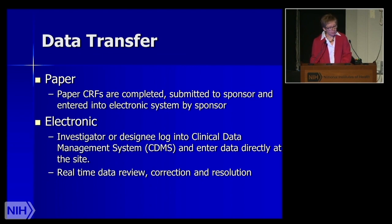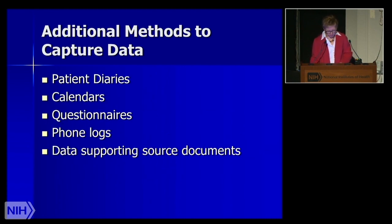For paper CRFs, forms are usually completed at the site, submitted to the sponsor, and then electronically entered by the sponsor at their site — a lot of extra work and expense. With electronic systems, staff can log in and enter data directly at the site, allowing real-time data review. Other collected materials may include patient-reported outcomes such as patient diaries, calendars, questionnaires, quality-of-life forms, and data-supporting source documents.